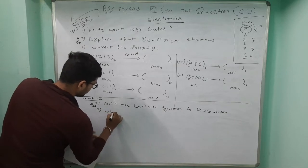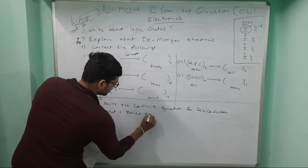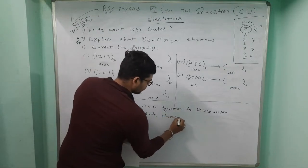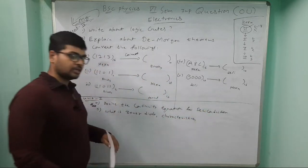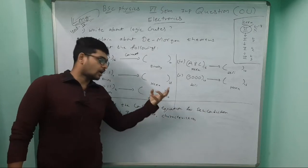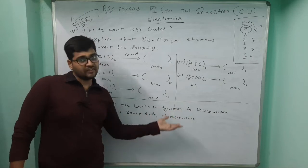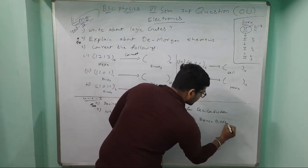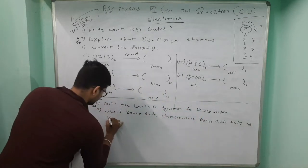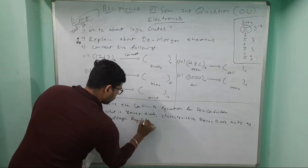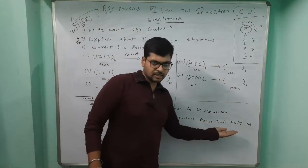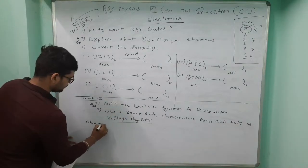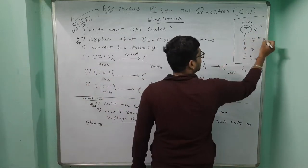Fifth question: write about what is zener diode and its characteristics. You have to draw zener diode diagram and characteristics graph to explain how it is behaving. Explain how zener diode acts as voltage regulator. This is about zener diode in Unit 2.